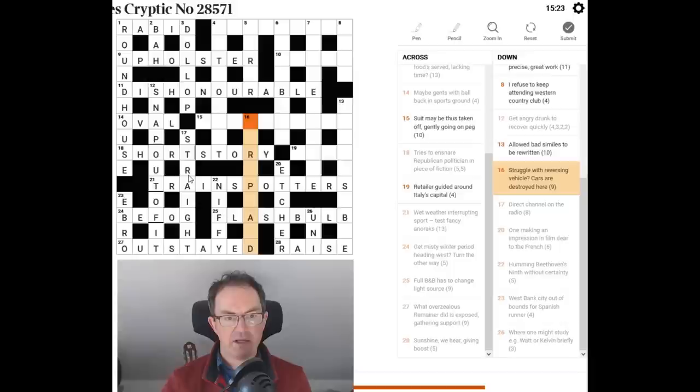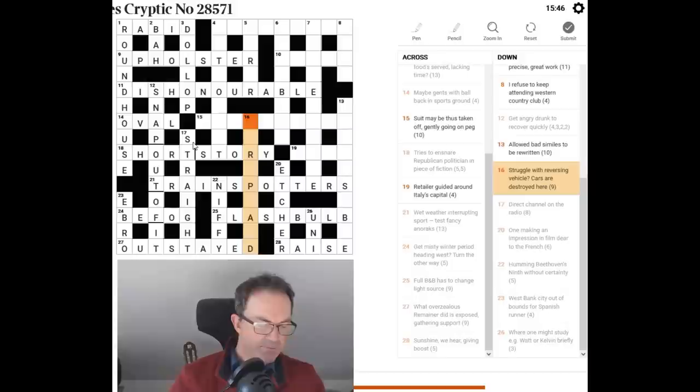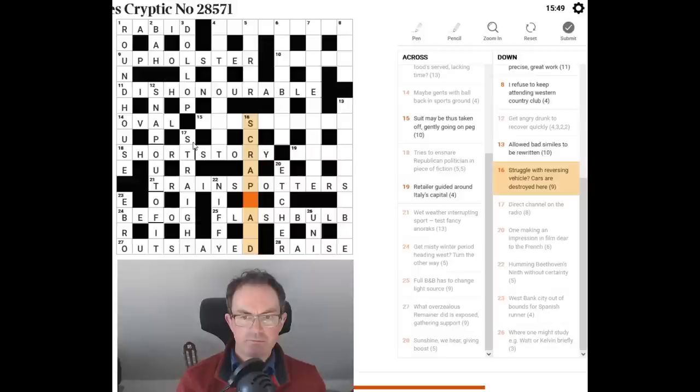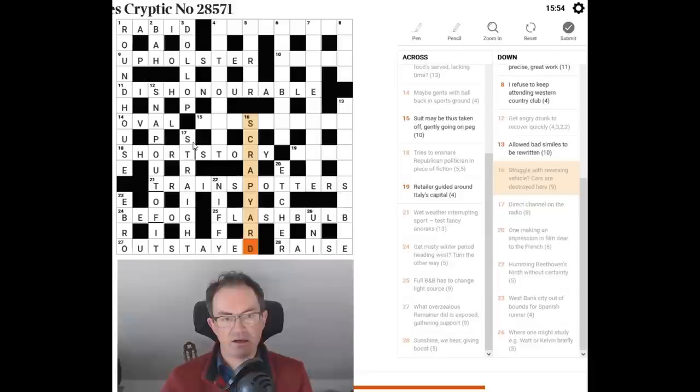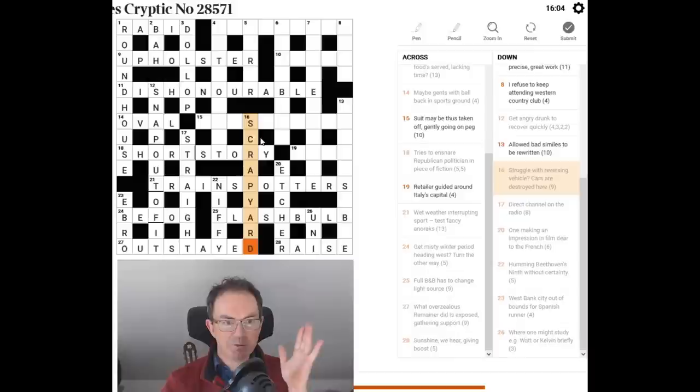This one. Let's just have a look at it before. I want it to be something like strapland. Or something. Strap band. Strip. Something card. I don't know. I haven't got this. Right. Struggle with reversing vehicle. Cars are destroyed here. Scrap yard. Yeah. Okay. So a struggle is a scrap. And a vehicle is a dray. It's a kind of cart. Isn't it. I think. And that reverses. So we reverse the word dray. To give us yard. And put them together. Scrap yard. Which is where cars are destroyed.